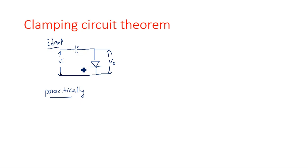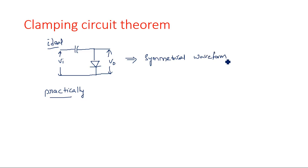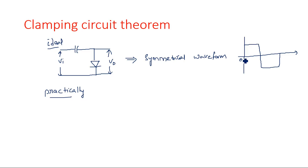Practically, this ideal circuit is not valid because when an unsymmetrical waveform is applied, the circuit takes some time to reach steady state response. This circuit is valid only for symmetrical waveforms. A symmetrical waveform has its positive peak and negative peak exactly equal, with the DC level at the center of the input signal — whatever the positive peak is, it is exactly equal to the negative peak.